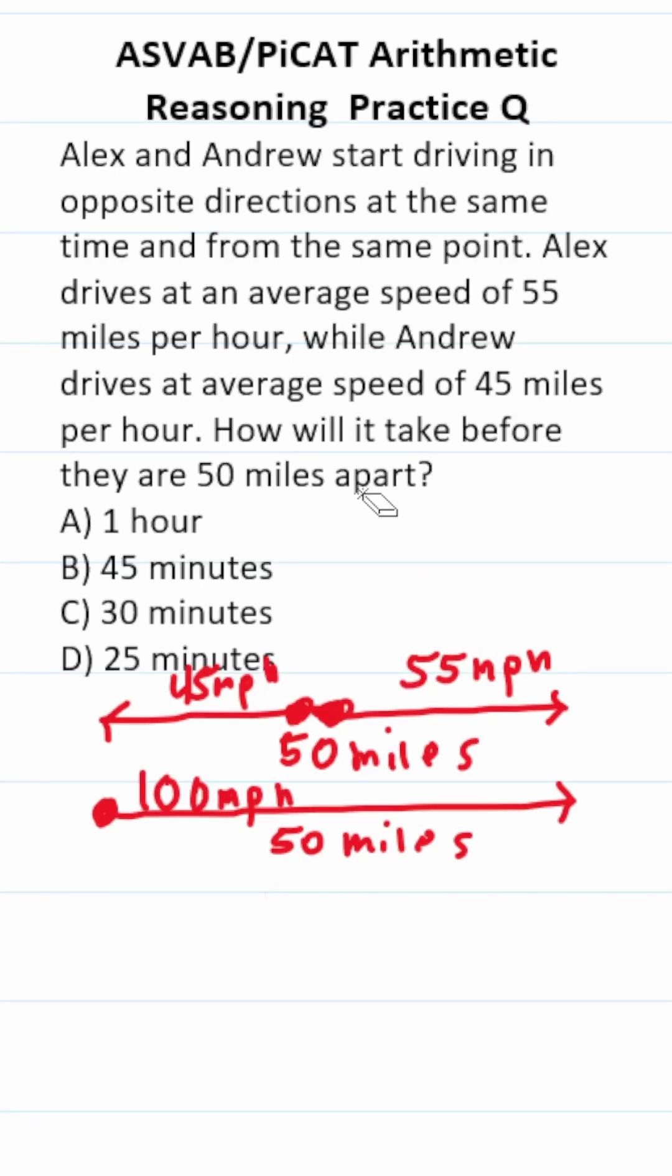This ASVAB PICAT arithmetic reasoning practice test question involves two people driving away from each other from the same point. One's driving away at 55 miles per hour, one's driving away at 45 miles per hour. We want to know how long it's going to take them to be 50 miles apart.